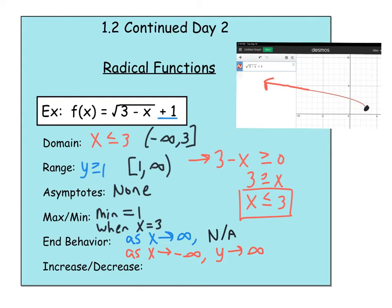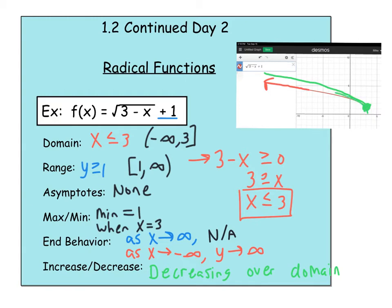Now for increasing and decreasing — think about going from left to right, the way you read a sentence. As we go to the right, the y values are getting smaller, smaller, smaller until they finally get to the endpoint. So this function is decreasing over the entire domain, even though when you draw it by hand you'd probably start from the right. But reading it left to right, the y values are actually decreasing. That's all the properties of this radical function example.